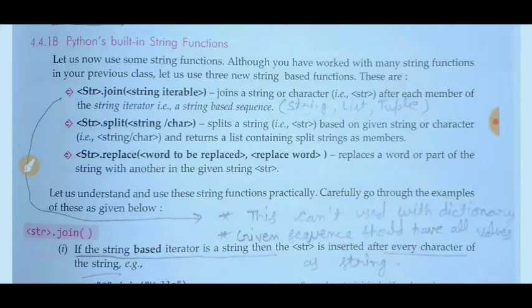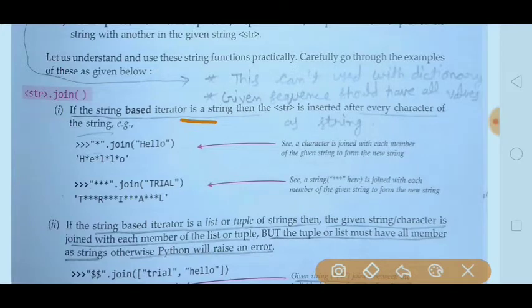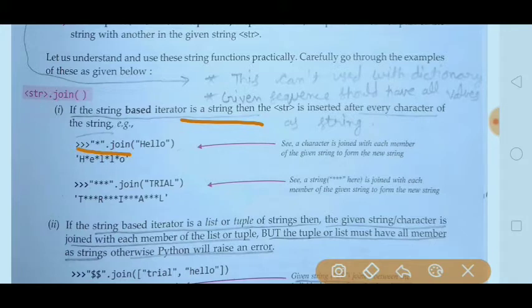As the name suggests, join means it joins a string or characters after each member of the string iterator. See example one: if the string-based iterator is a string, then the str is inserted after every character of the string. Here the asterisk sign is the string object calling dot join, which is the function.